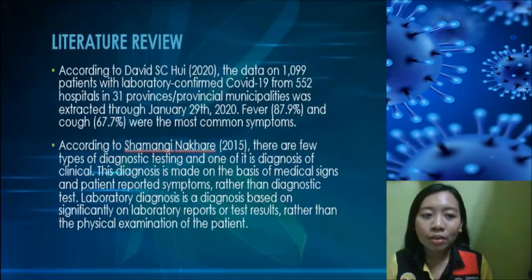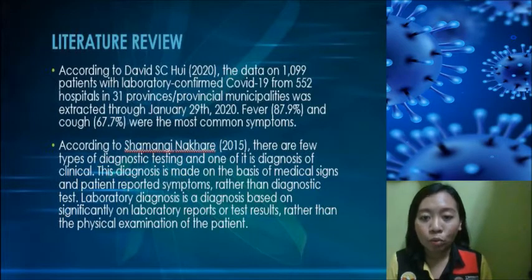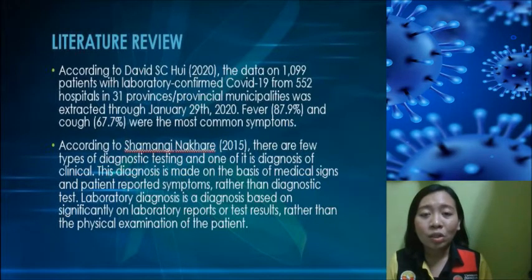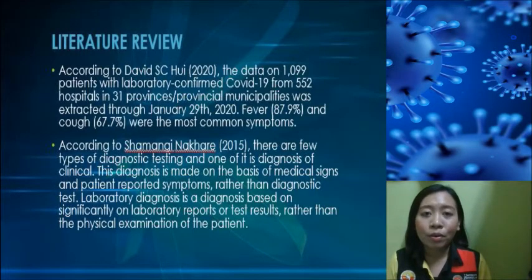data on 1,099 patients with laboratory-confirmed COVID-19 from 552 hospitals in 31 provinces or provincial municipalities was extracted through January 29, 2020. The most common symptom shown was fever at 87.9% and cough at 67.7%.